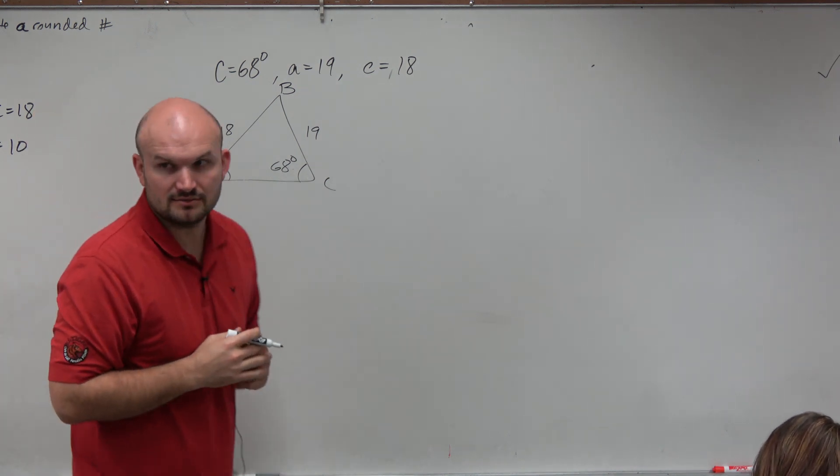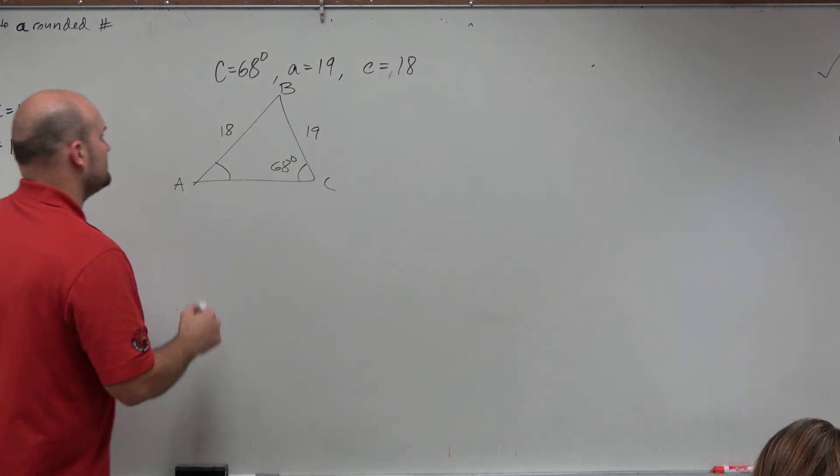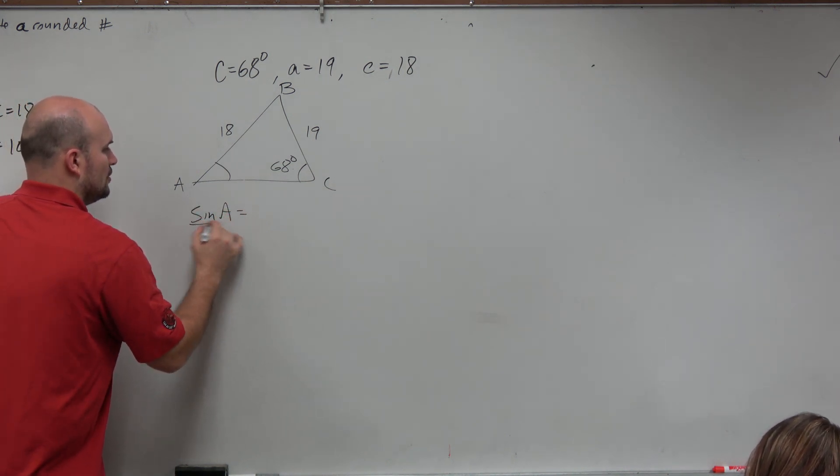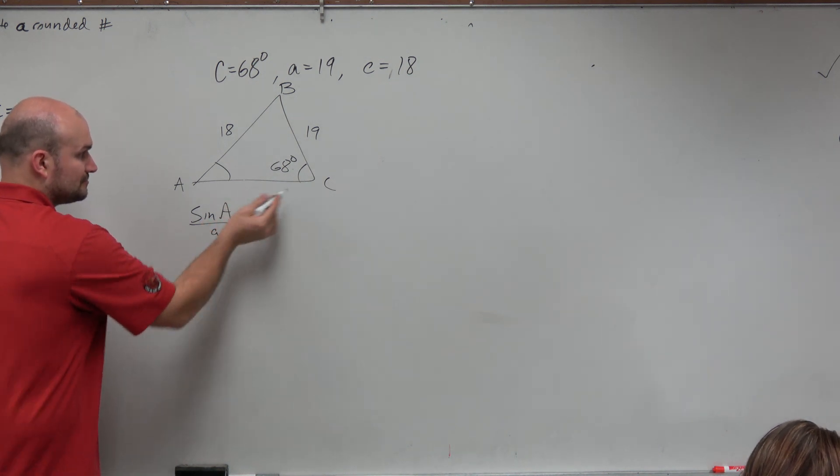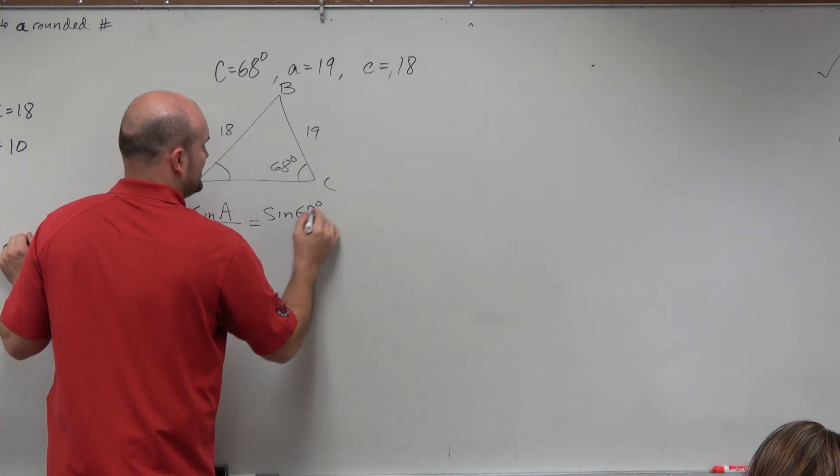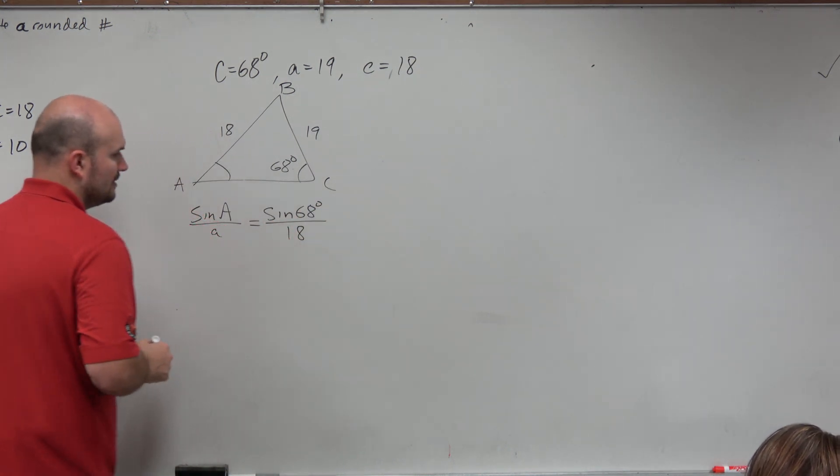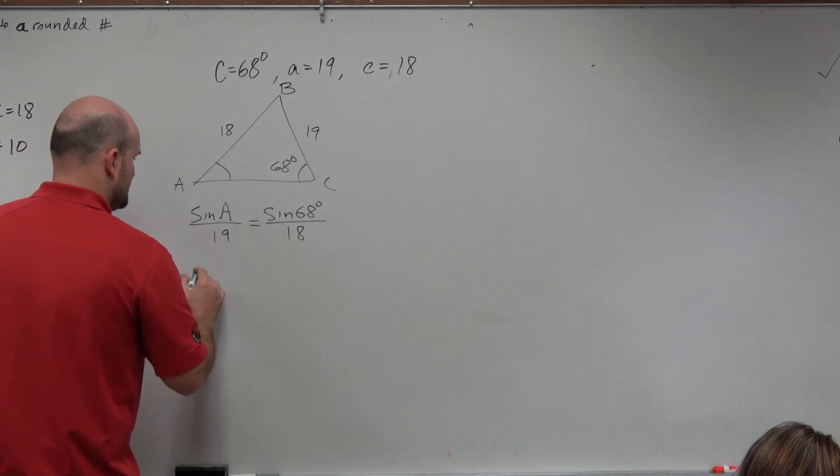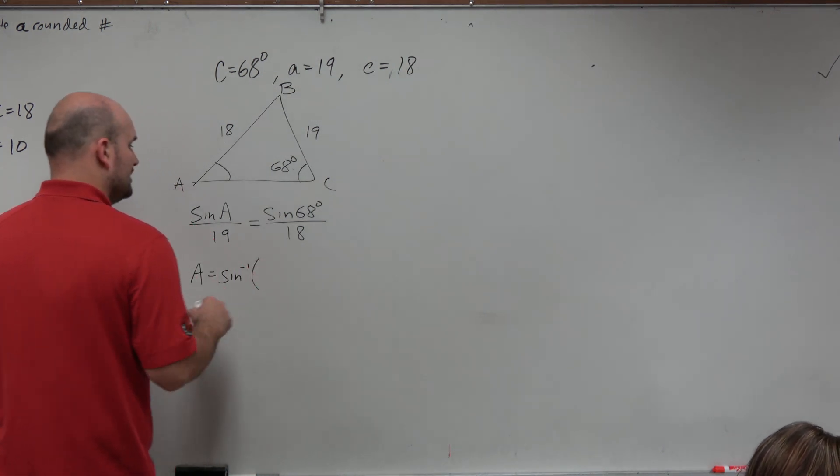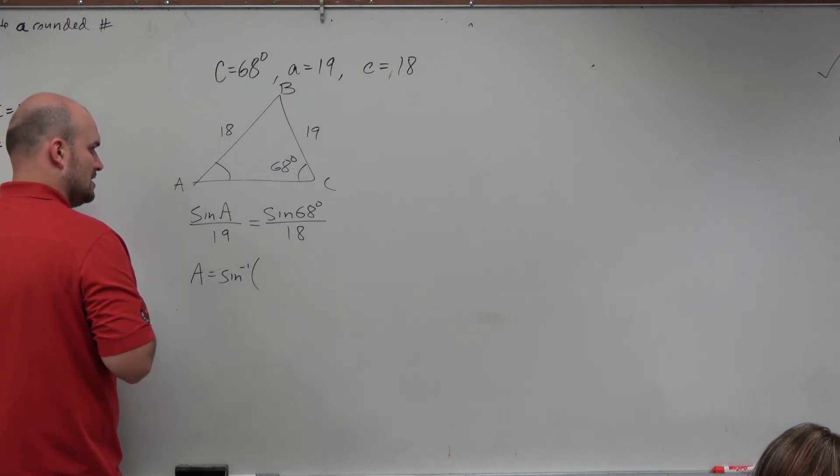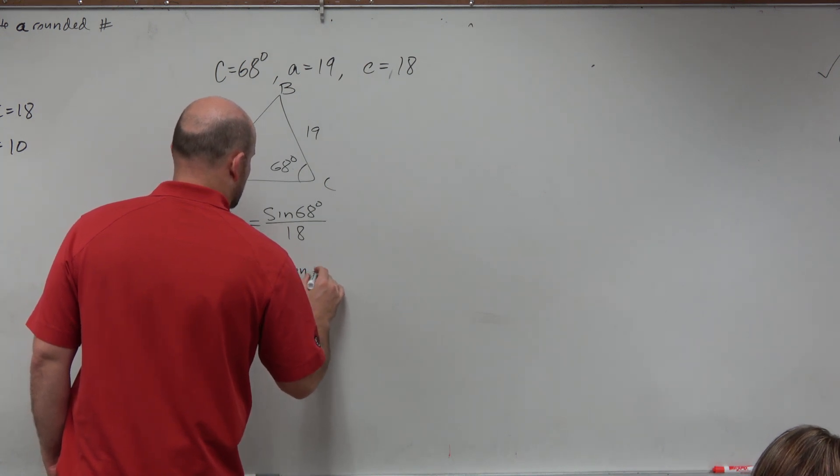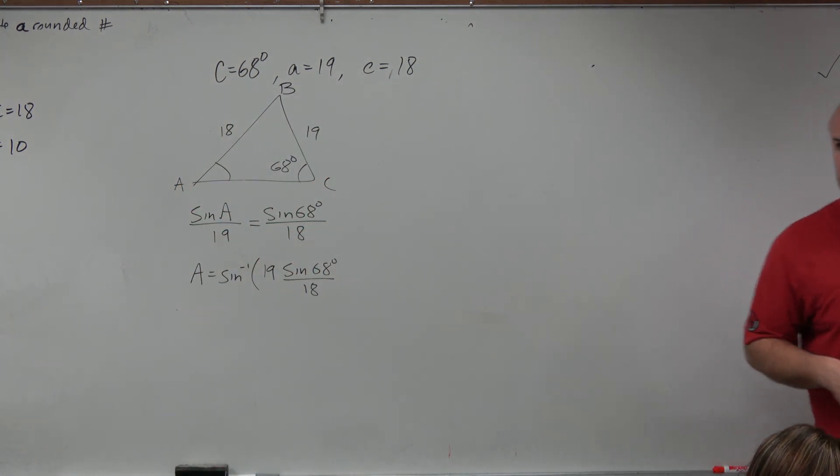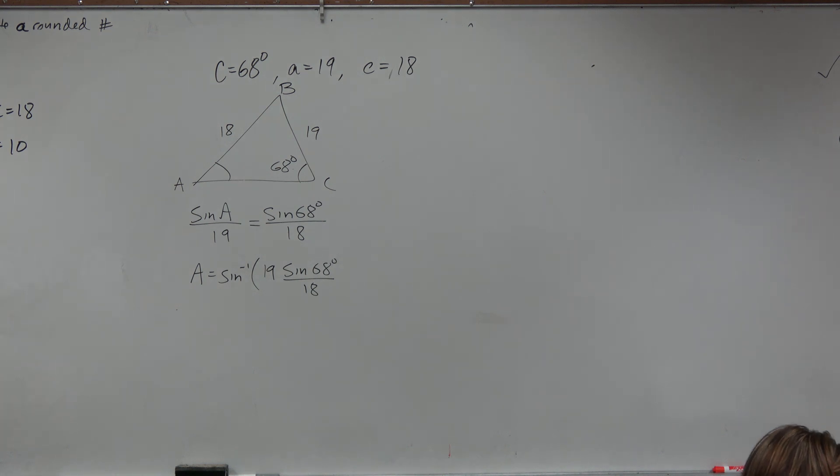Based on this information, we see that we have angle-side-side, so it is the ambiguous case, meaning we could have information that doesn't even create a triangle, we could have just this one triangle, or we could have two possible triangles. The first thing is we could all just solve for A. To solve for A, we're going to use the law of sines and make sure A is in the numerator. So sine of A over A equals sine of 68 degrees over 18. We know A is 19, so therefore A equals sine inverse of 19 times sine of 68 degrees all over 18.